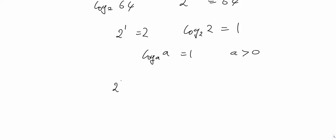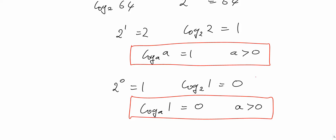Also, 2 to the power of 0 is 1, and the logarithm form would be the logarithm of 1 to base 2 is 0. There's nothing special about 2, so the logarithm of 1 to base a equals 0 for any positive a. It's useful to remember these two results.